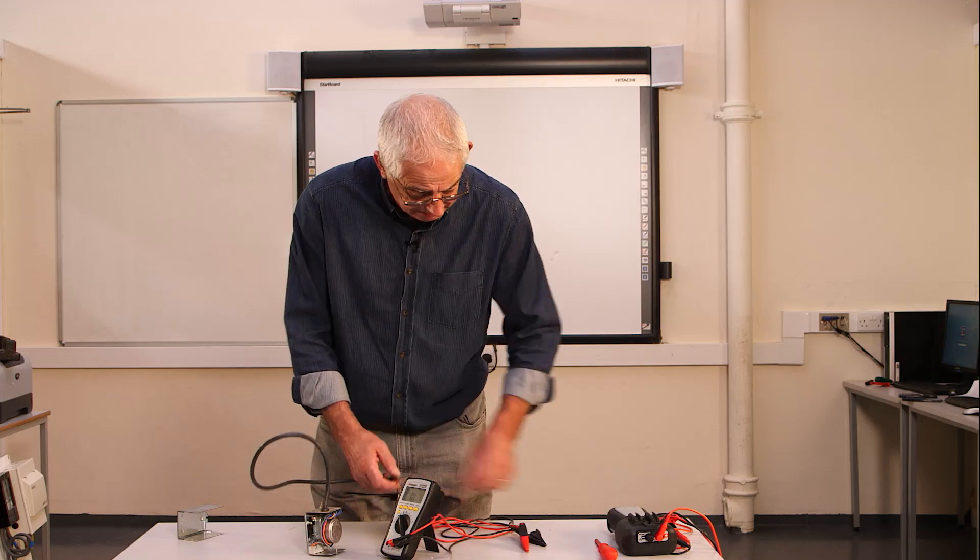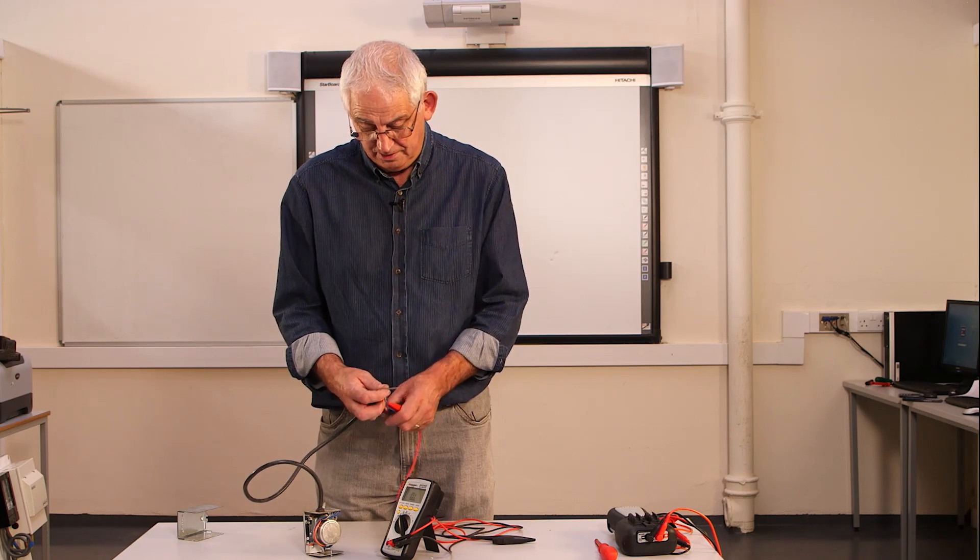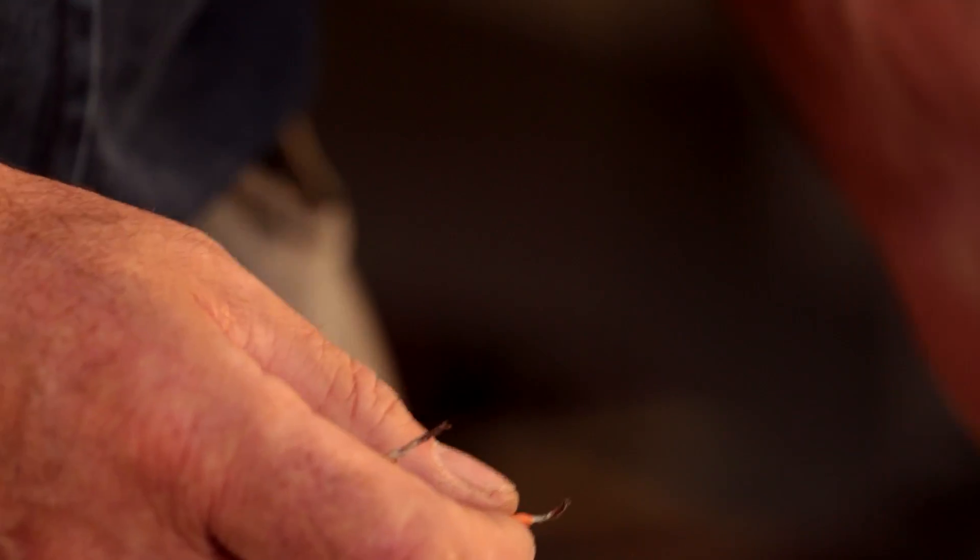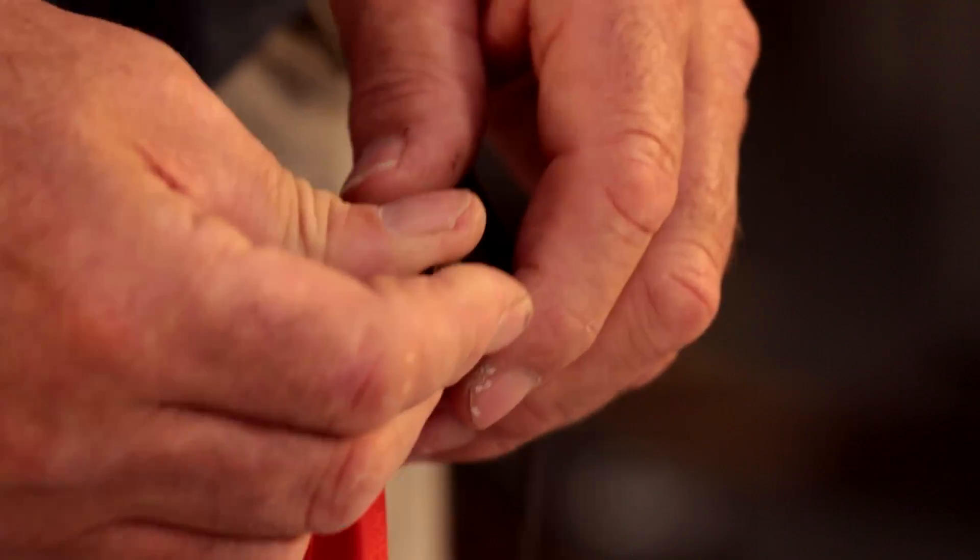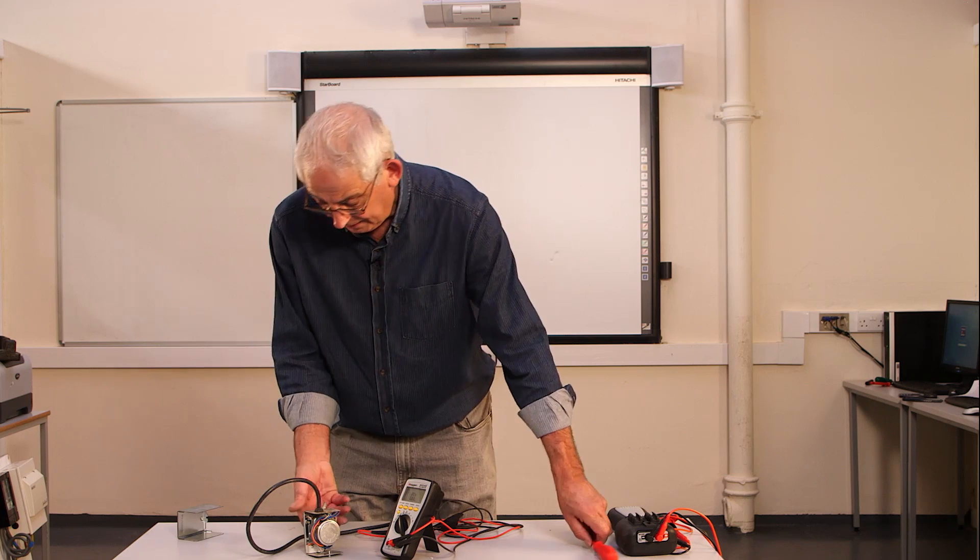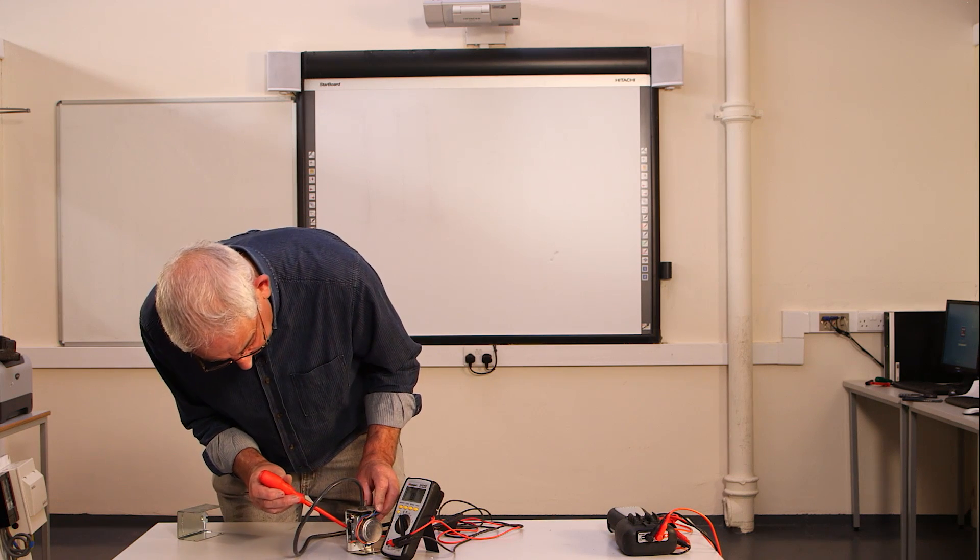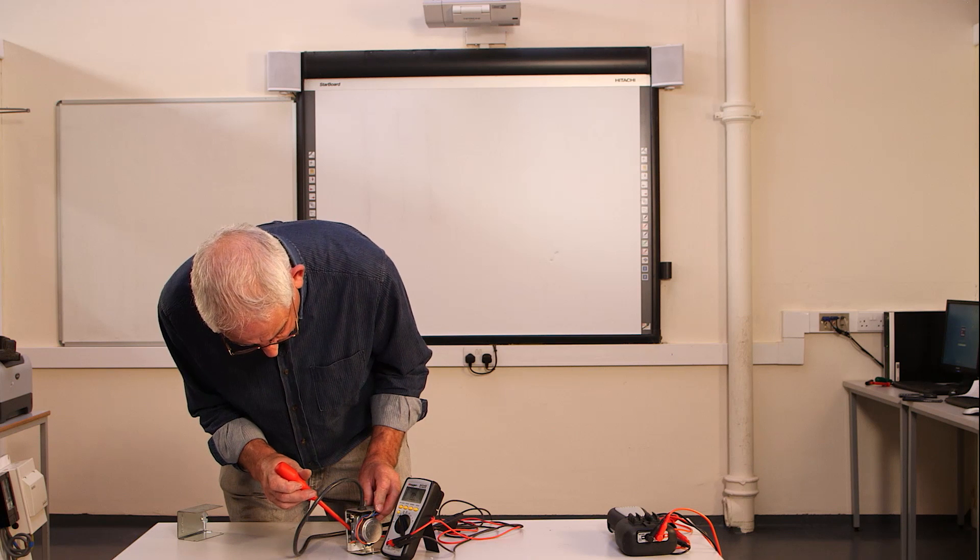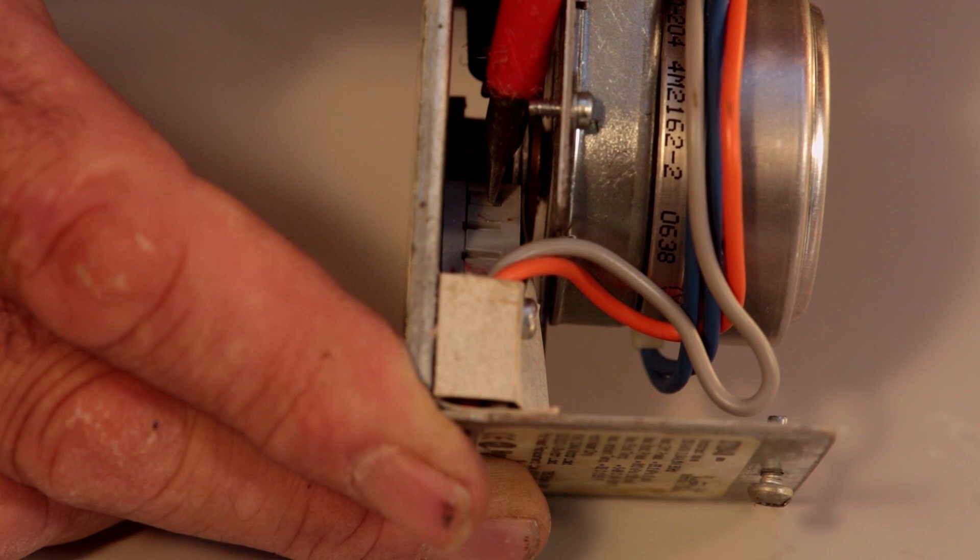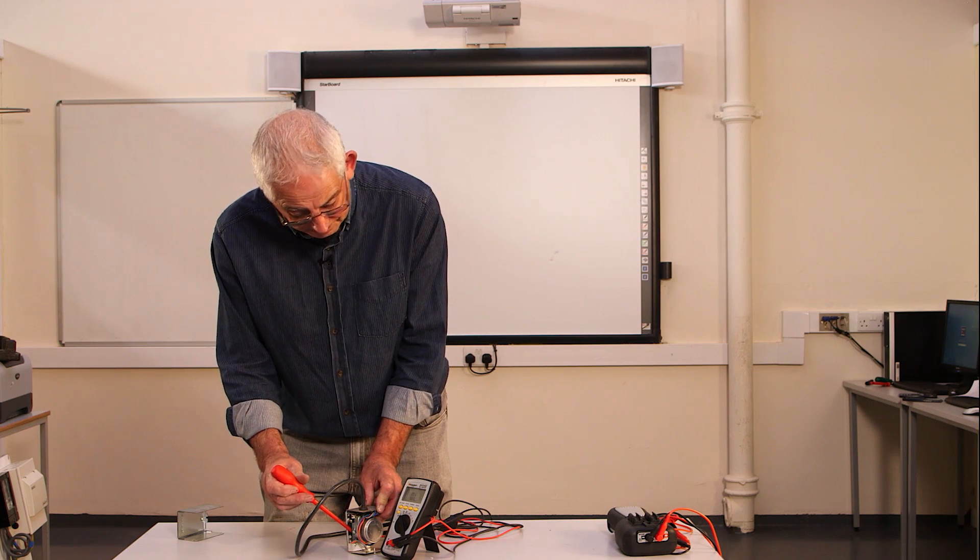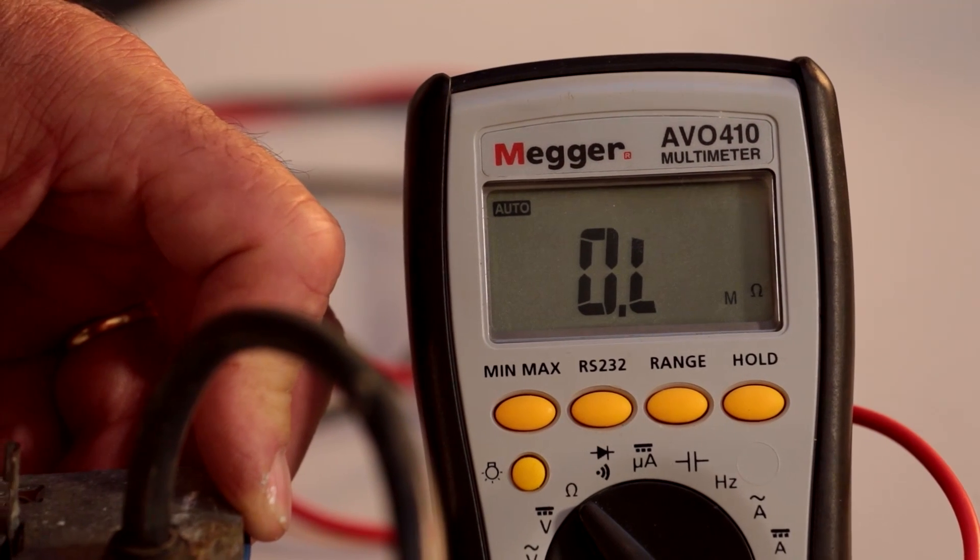We need to connect our multimeter to the grey and the orange and then with the screwdriver just push the micro switch contact down and we should get a reading. So, you can see now by the reading on the micro switch, we've actually got a closed circuit.